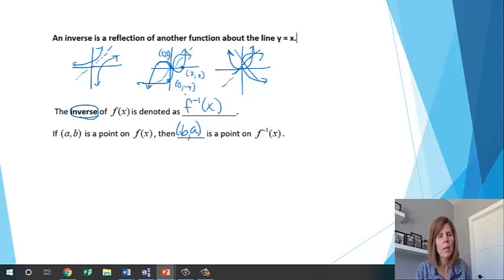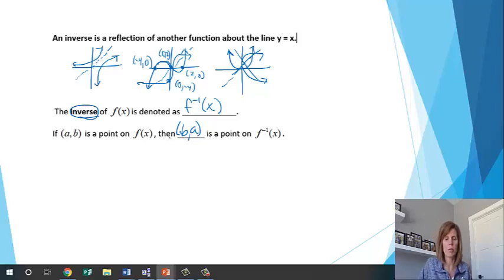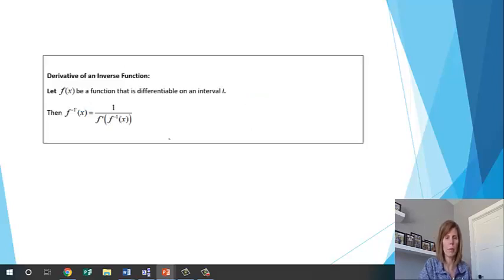If I have the point (0, negative 4) on the original function, then on the inverse, negative 4, 0 is on the inverse. The x and the y end up getting switched around when we do those problems.